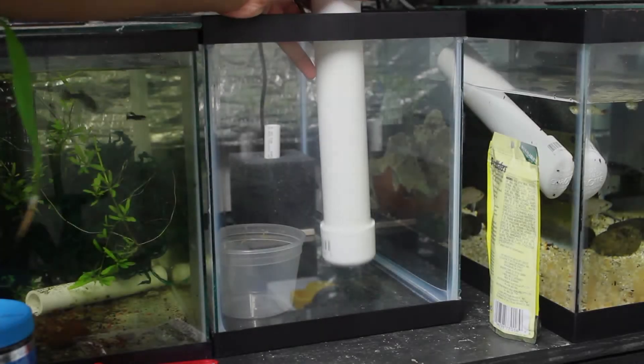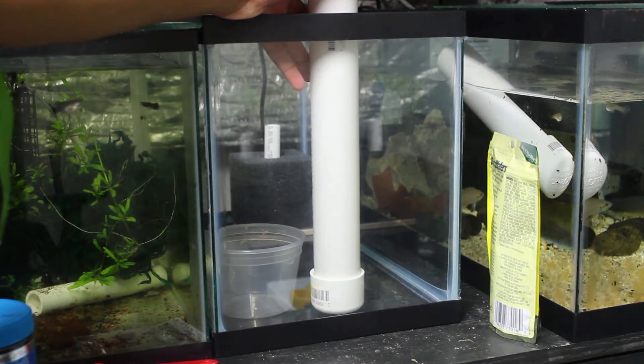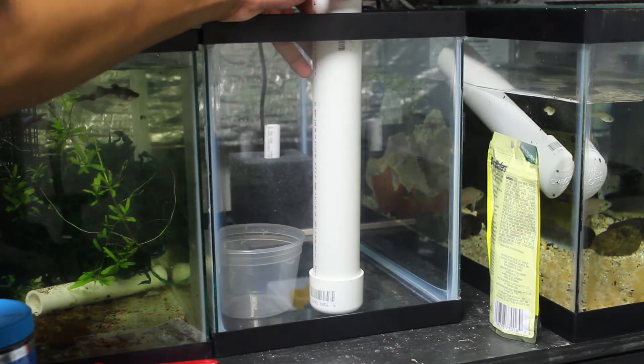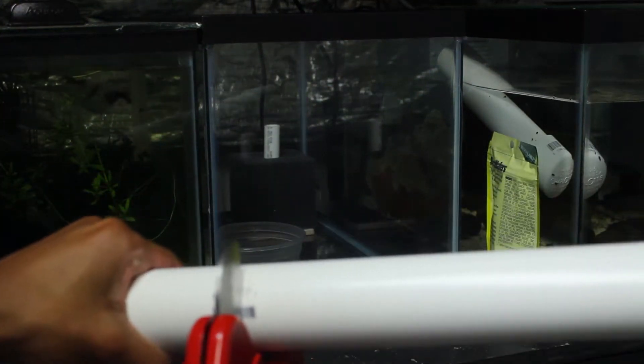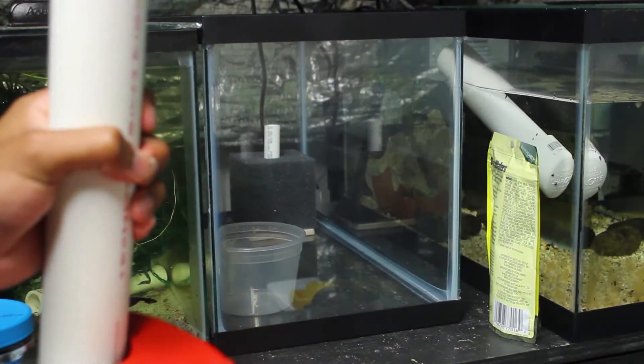Using PVC with a slightly wider diameter, I cut the intake to the top of the tank, just below the rim. By using PVC of a slightly wider diameter, I can make sure that the water doesn't get sucked out too quickly through the intake and cancel the siphon.